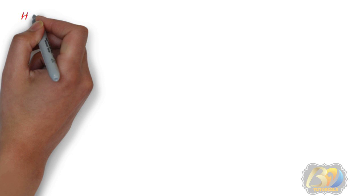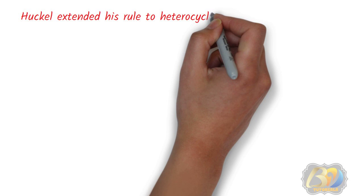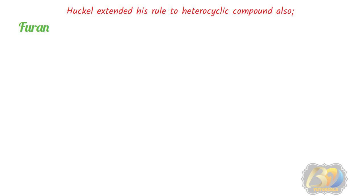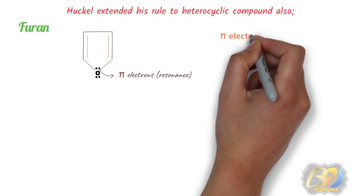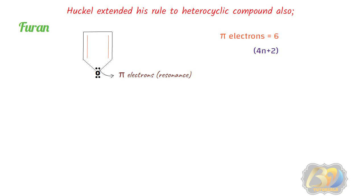Hückel extended his rule to heterocyclic compounds as well. For example, furan. Furan is cyclic, planar, and all ring atoms are sp2 hybridized. It has only 2 pi bonds, giving 4 pi electrons. However, one lone pair on the oxygen participates in resonance and is also counted as pi electrons. So 4 electrons from 2 pi bonds plus 2 electrons from oxygen gives a total of 6 pi electrons. For n=1: 4×1+2 = 6. Hence, furan is aromatic.